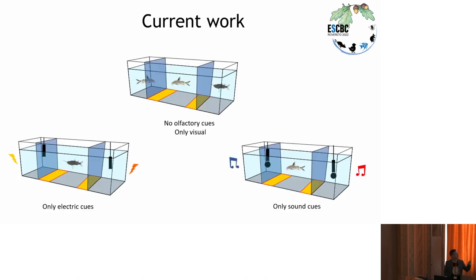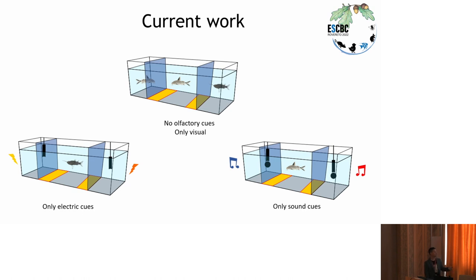Now that I have answered this first simple question, I can move to the one I asked at the beginning: are these sensory cues, depending on the social communication system, alone enough to allow them to recognize their conspecifics? To do this, I designed three different experiments I am currently working on. The first is to understand if, in the absence of olfactory cues, there is still species-specific recognition. Then I will test my electric species in a setup in which I expose them to social electric discharges versus white noise electric discharges. For the vocalizing species, I will test them with social sounds versus non-social sounds. And for eupterus, which can produce both types of signals, I will test them in both apparatuses.